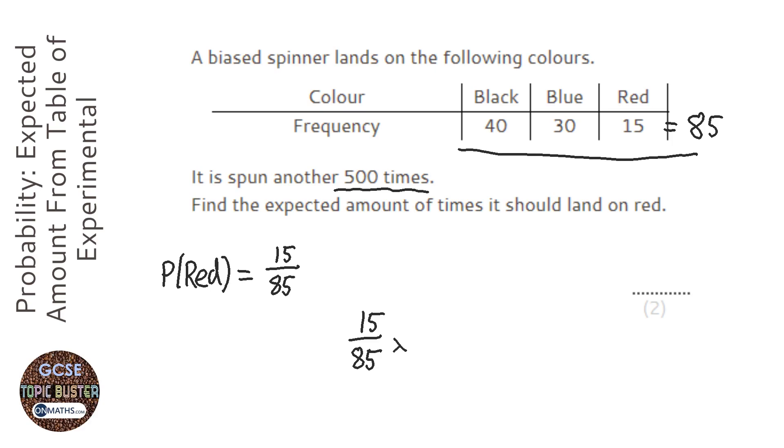And all you need to do is just times that by 500 and that's it. So I'll use my calculator, 15 over 85 times by 500.